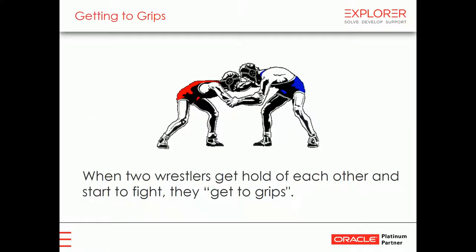This presentation is called Getting to Grips with the Interactive Grid API. "Getting to grips" — apparently, when two wrestlers get hold of each other and start to fight, they get to grips. This presentation is aimed at beginners, but it gets to quite an advanced level in gradual steps. I'll introduce concepts slowly and then build up with more and more complexity.